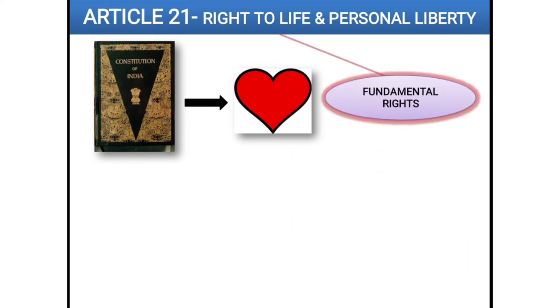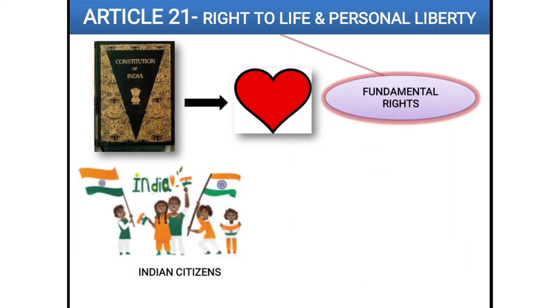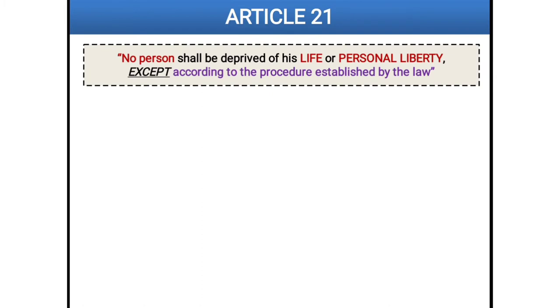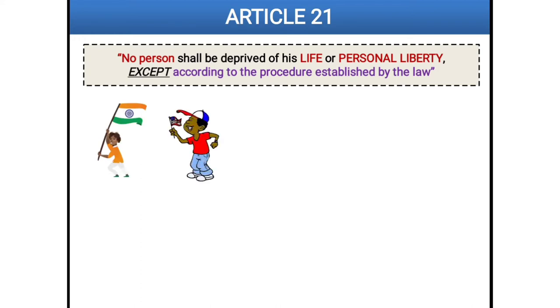It is a fundamental right that has been given to both citizens as well as non-citizens. What is actually written in Article 21? It states: no person shall be deprived of his life or personal liberty except according to the procedure established by the law. Any person, whether an Indian citizen or a foreign national, cannot be deprived of — number one, the right to life, and number two, the right to personal liberty.